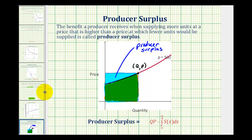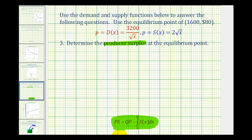Now let's go back and take a look at our example. So the producer surplus is going to be equal to q times p, or 1600 times 80, minus the integral from zero to q, or from zero to 1600.